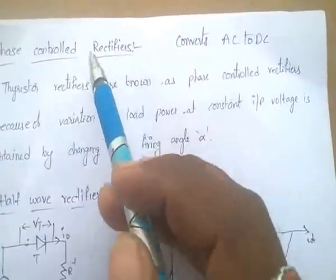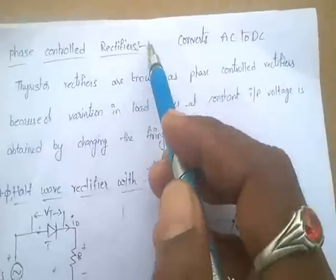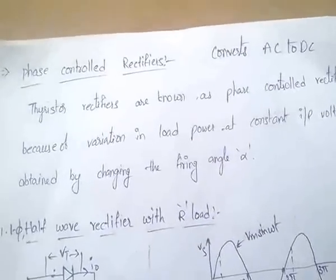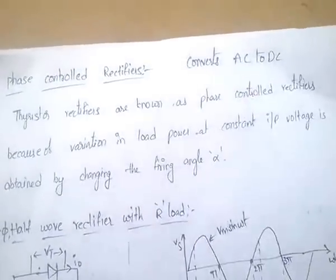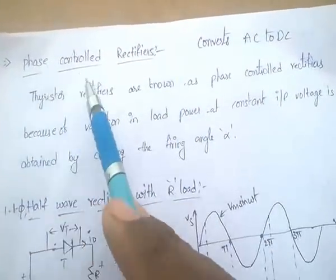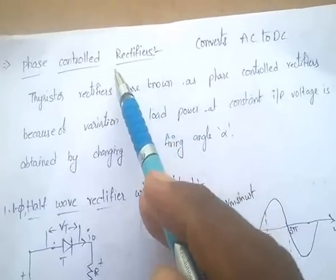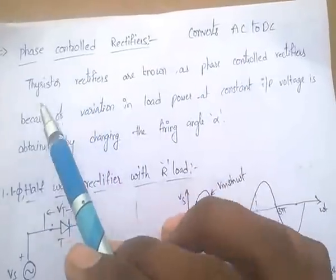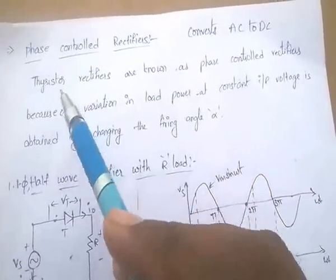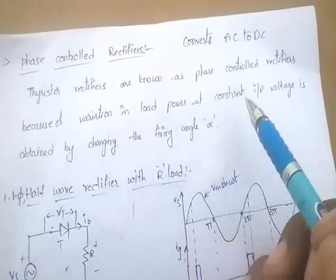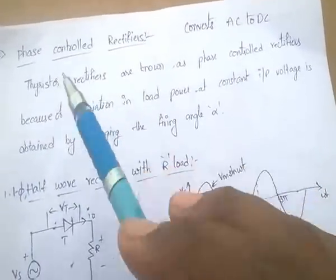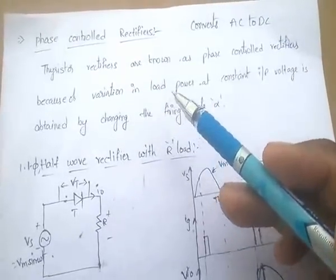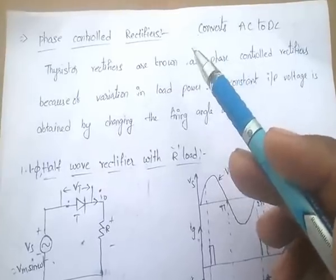Phase controlled rectifiers — very important. A rectifier converts AC to DC. Phase controlled rectifiers use power control devices (thyristors) as rectifiers, allowing control of rectification. Thyristor rectifiers are known as phase controlled devices because variation in load power at constant input voltage is obtained by changing the firing angle.